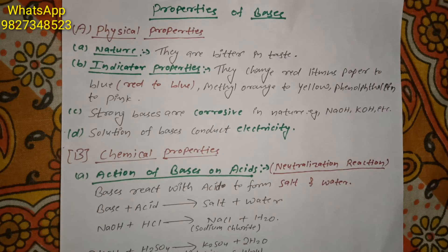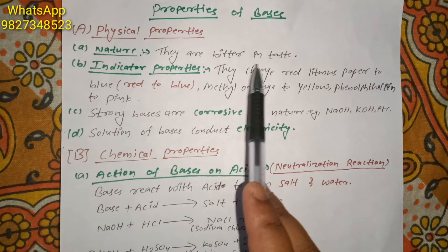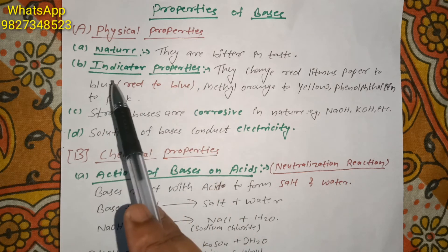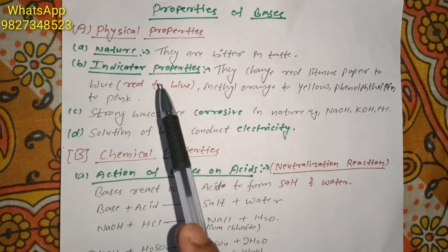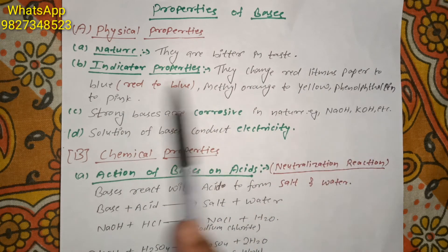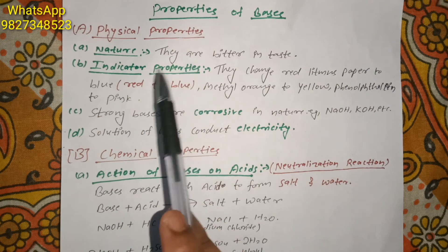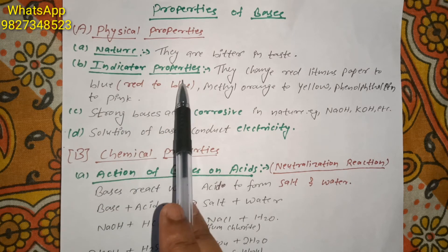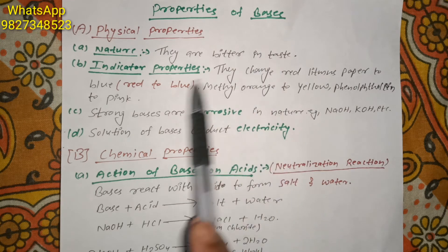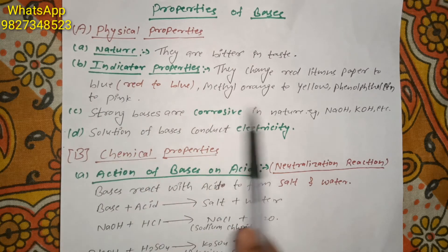Now let's see the physical properties of bases. The first physical property is nature — they are bitter in taste. The second physical property is indicator property, which shows whether a compound is a base or not. Bases change red litmus paper to blue. Methyl orange changes to yellow when in contact with bases, and phenolphthalein changes to pink. These are the indicator properties of bases.